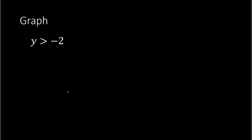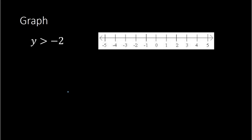For example, if you're given y is greater than negative 2 and you are told to graph this, you have a number line and you are shading in all the possible solutions for y. So y could be anything bigger than negative 2 — it could be negative 1, it could be 0, it could be 1. Anything bigger than negative 2, I shade in, and it keeps going forever so I draw a little arrow at the end.